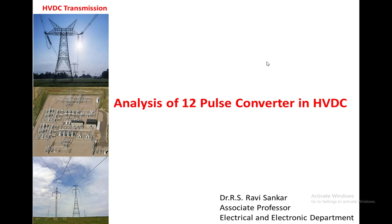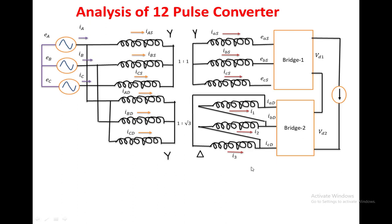Welcome back to the class on HVDC transportation system. In this lecture we are going to discuss about the analysis of the 12-pulse converter in an HVDC system. Why should we go for the 12-pulse converter analysis? To reduce the harmonics on the AC side as well as the DC side. This is the circuit diagram of the 12-pulse converter.